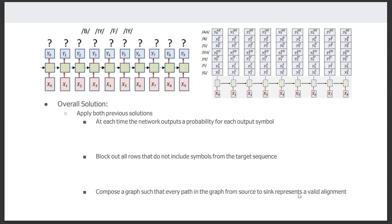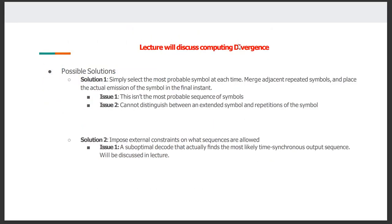Looking at this example, at time step T equals 1, which corresponds to input x equals 0, our network produces a probability vector with the probability for each output symbol. We could pick the output symbol with the highest probability at each time step, and if at two given time steps the output symbol produced is the same, we could just merge those two. So if at T equals 1 we produce B, and at T equals 2 we produce B again, we could just merge both of those.